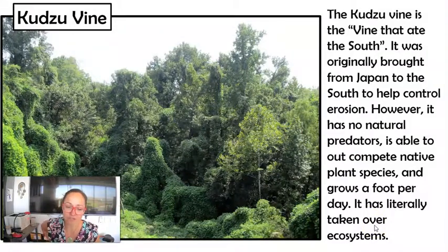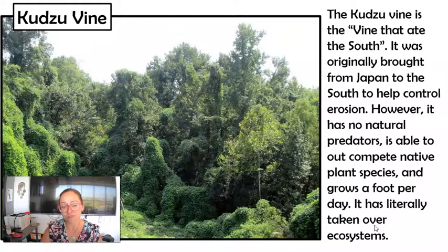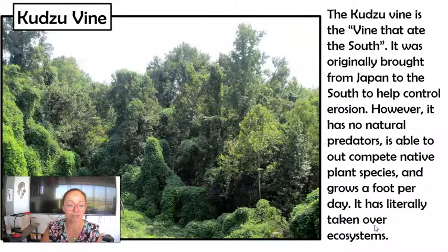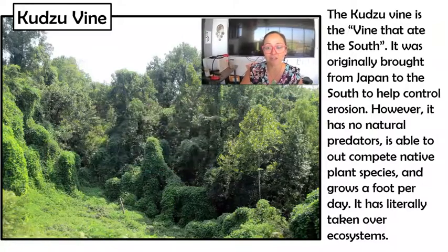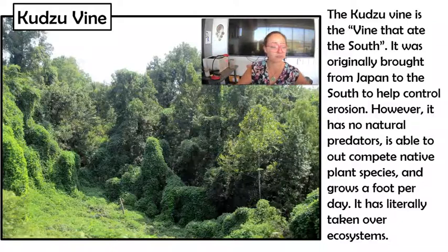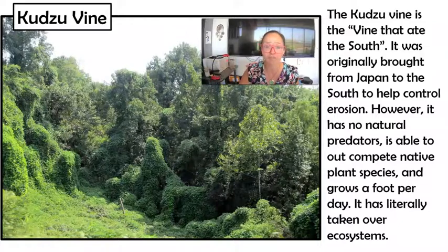The kudzu vine is said to have 'ate the South.' It was brought to the southern United States in the early 1900s — first as an ornamental plant, then to help control soil erosion. But kudzu grows a foot a day and is really good at out-competing native plant species for light and space. In this picture you can see the vine has grown on top of other trees, houses, and cars. There are no natural predators, herbivores, or pathogens that eat it, so it just takes over.